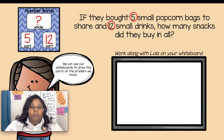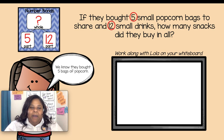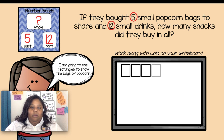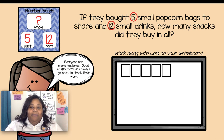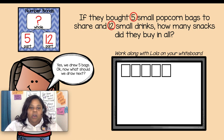Let's work along with Lola on your whiteboard. We can draw the parts of the problem we know. When we draw pictures to help solve problems, it is important to keep the shapes simple. We know that they bought five bags of popcorn, so I'm going to use rectangles to show the bags. One, two, three, four, five. Let's recount to make sure we drew five — one, two, three, four, five. Everyone can make mistakes; good mathematicians always go back and check their work. Yes, we drew five bags.